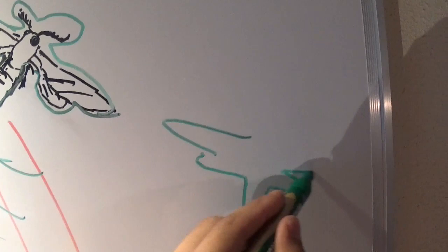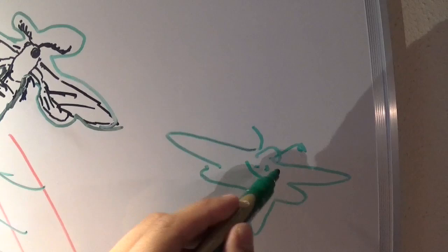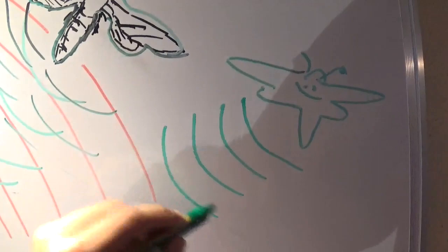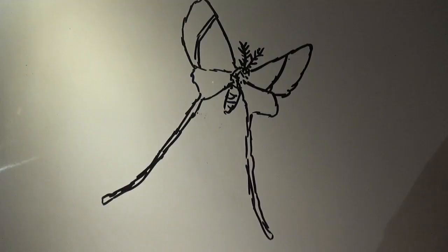Very schematic, but okay, you get the point. Let's give him a smiley on its thorax. This is what the bat will see because of reflecting sound waves, basically the silhouette of the insect in complete darkness.